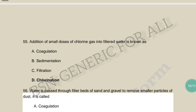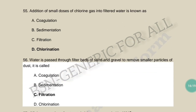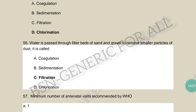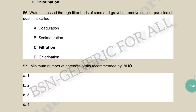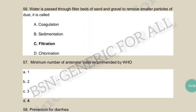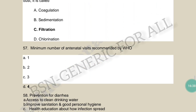Addition of small doses of chlorine into filtered water is known as chlorination — we do this so that bacteria, germs, and other pathogens are eliminated. Water passed through a filtered bed of sand and gravel to remove smaller particles of dust is called filtration. The minimum number of antenatal visits recommended by WHO is 4 visits for pregnant women.